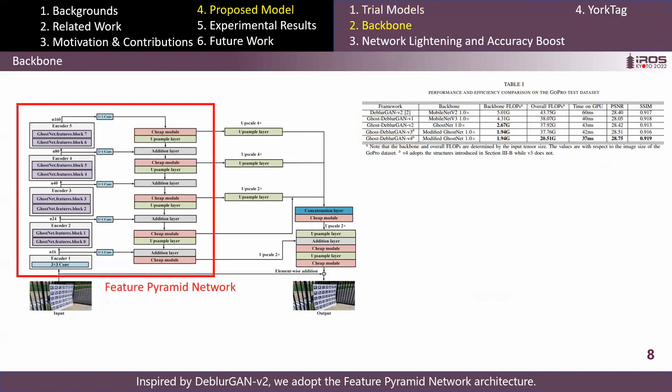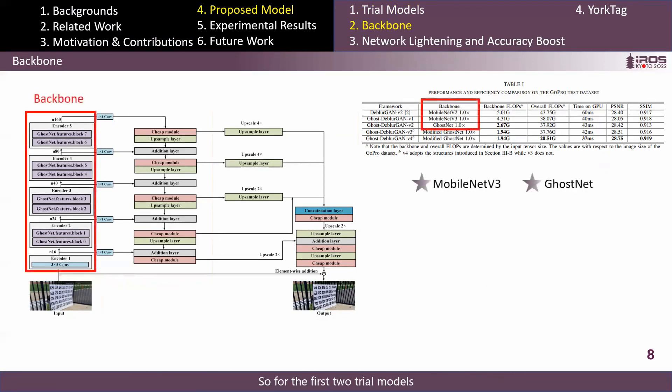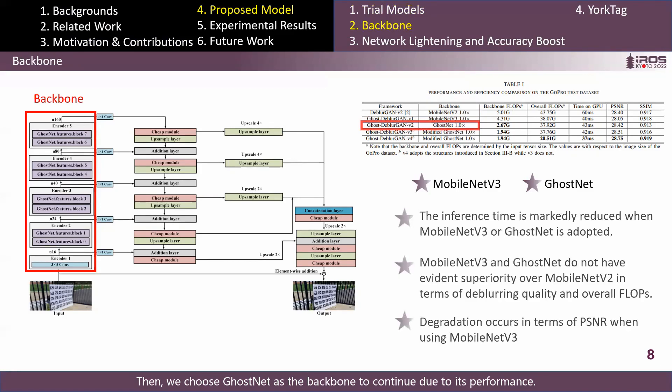Inspired by DeblurGAN V2, we adopt the feature pyramid network architecture. For this kind of architecture, a straightforward thought is to upgrade the backbone. So for the first two trial models, we tested MobileNet V3 and GhostNet, which are the state-of-the-art backbones since MobileNet V2. Then we chose GhostNet as the backbone to continue due to its performance.